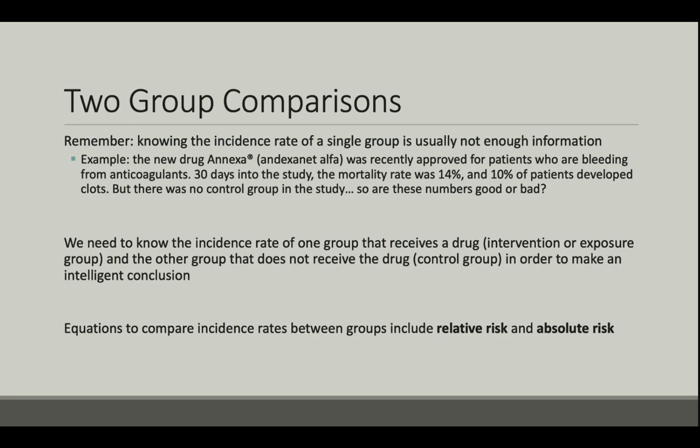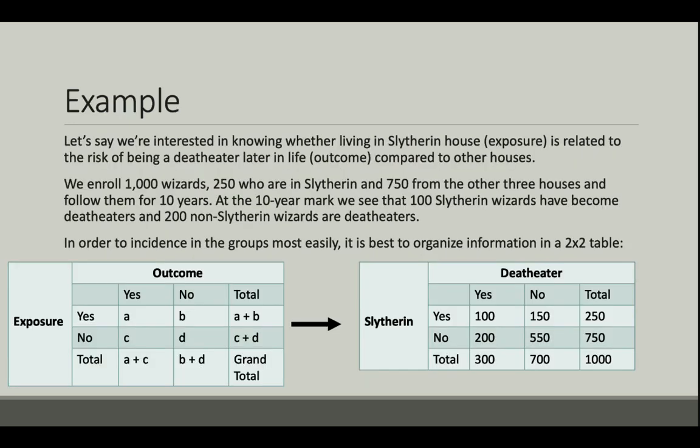Equations to compare incidence rates between groups include relative risk and absolute risk. Let's use an example and explore the utility of 2x2 tables in analyzing outcomes.